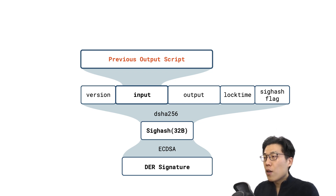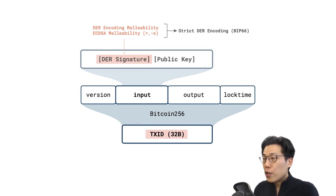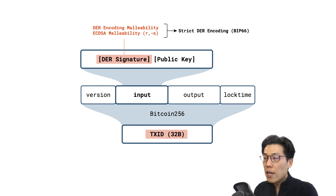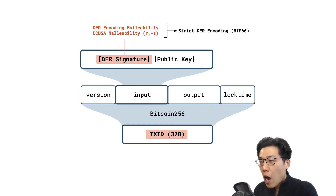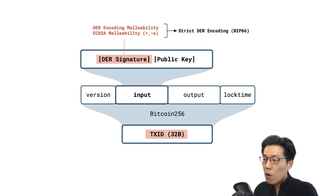Given the input script can be modified, there are two general ways this is possible without affecting transaction validity. Firstly, the DER signature is malleable itself. Historically, it suffered from OpenSSL encoding ambiguity, meaning the same R and S values could be encoded differently and still be valid. There is also an inherent ECDSA malleability, which enables the complement of the R and S values to be equally valid. Neither DER malleability exploit requires knowledge of the private key, but these signature malleability issues were mostly solved with a strict DER encoding described in BIP66.